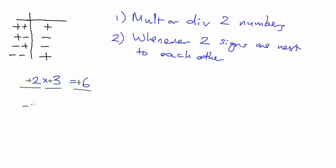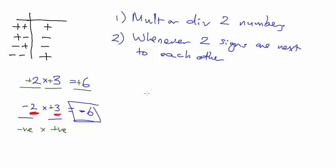If you're doing minus two times three, first think about the signs. This one is clearly a negative and because there's no sign in front of the three it's a plus three. So you've got negative times positive - your answer is going to be negative. Then ignore the signs and do two times three which is six. So minus two times three is minus six. The same goes for dividing.